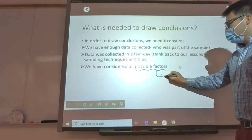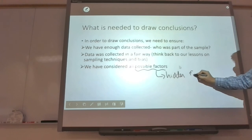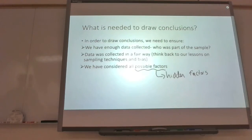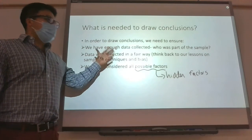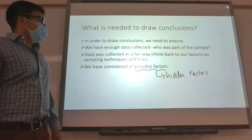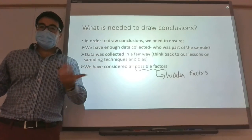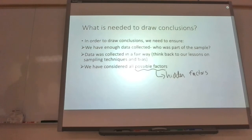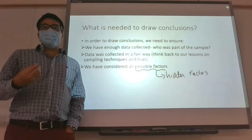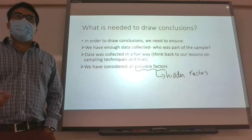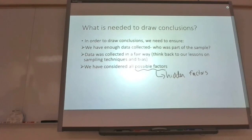The last thing is that you want to consider all possible factors — sometimes called hidden factors, or things we didn't consider at all. Going back to that graph about liking school for boys and girls: we can count how many boys and girls were in the sample, we can figure out if there was any bias in how it was collected, but the most important question is: why do boys not like school as much as girls? That's the deeper question — are there any other factors we're missing?